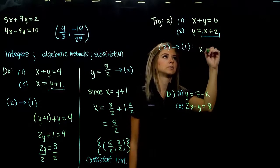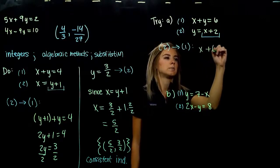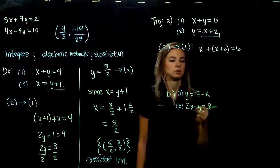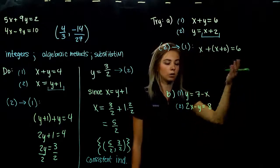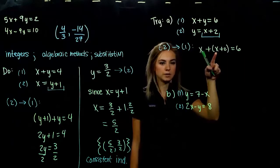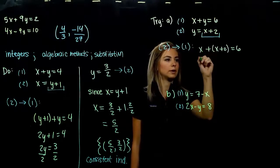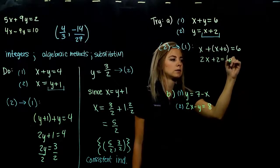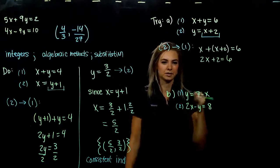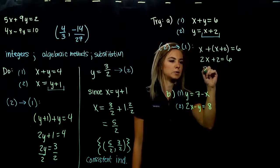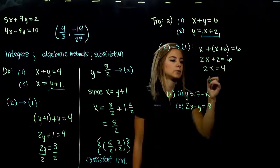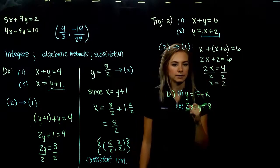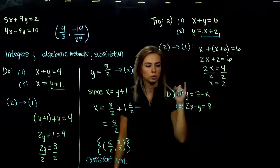My x value comes first. My y is equivalent to x plus 2, so I substitute to get an equation all in one variable. These parentheses don't matter, so combine like terms: we've got 2x's and the constant 2 is equal to 6. Solving for x: subtract 2, giving 2x equals 4, so x equals 2.